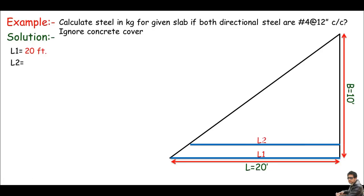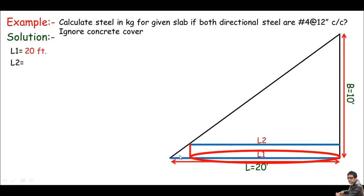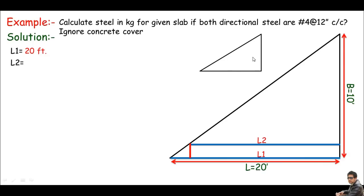Now what about L2? This is a little challenging. The center-to-center distance between two bars is 12 inches, and the bar is number four. If I draw a perpendicular line, L2 is just a portion of L1. I need to subtract a small increment from L1 to find L2. I'll work with a small triangle where the base is x — the value I want to find — and the height is one foot, which is the 12 inch center-to-center spacing.